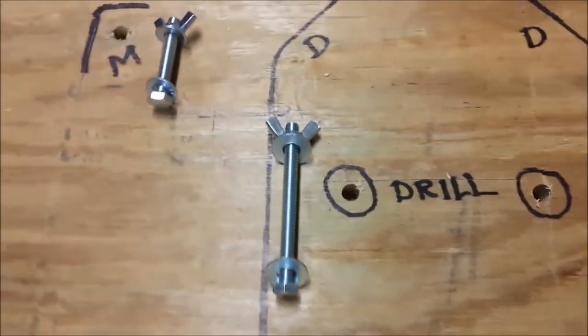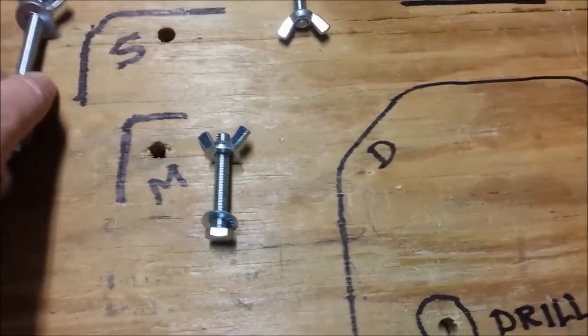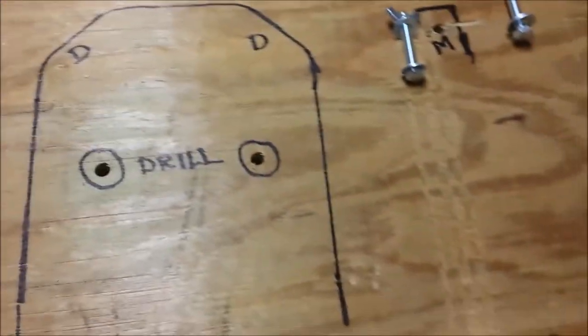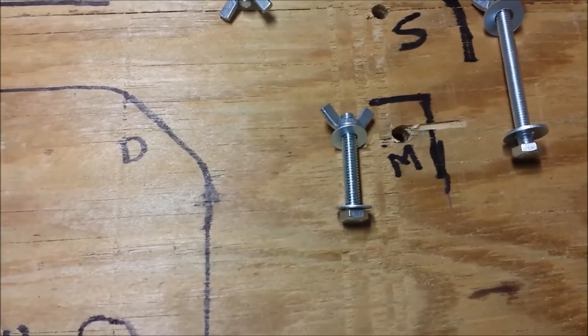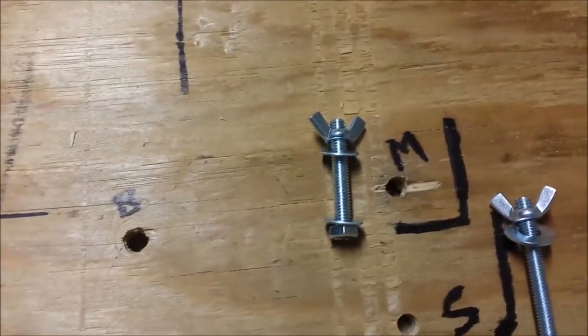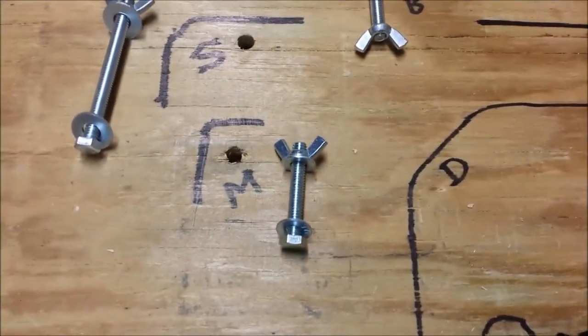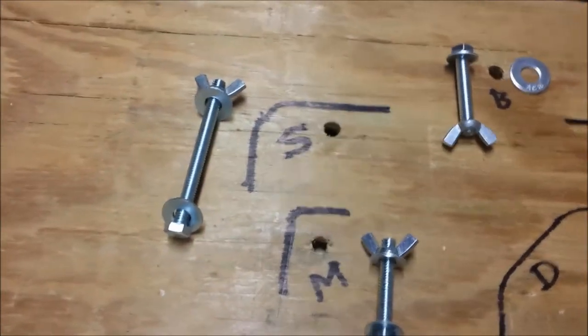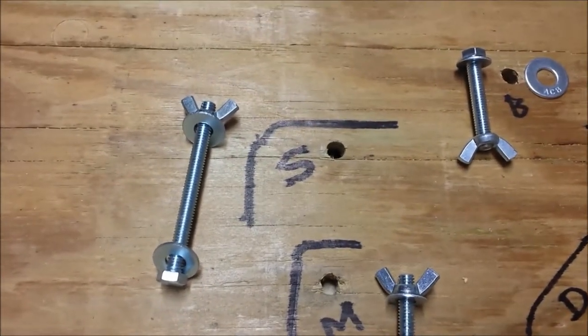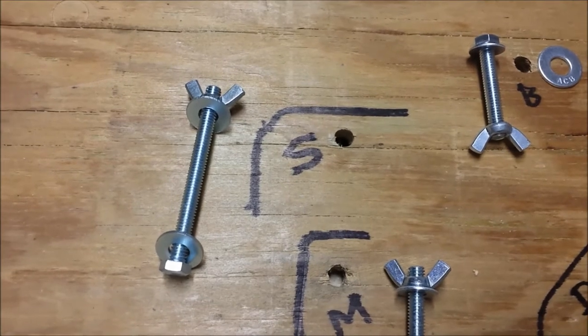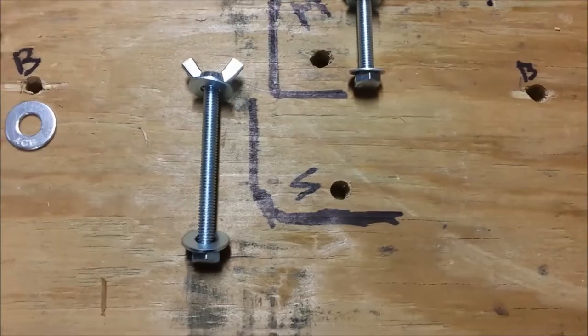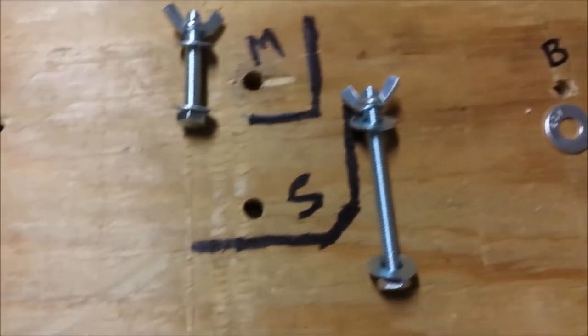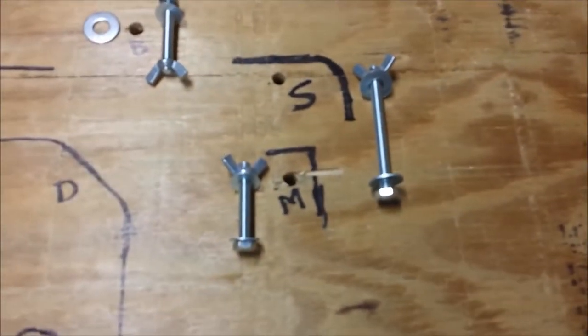The same bolt that you see here I'm also going to use on the table saw and we'll talk about that in a minute. Then you see right here the bolts and the wing nuts and washers that I've used for the miter saw. I have four of those right there and then you can see I've taken the outline of the table saw and marked that as S and I have much longer bolts there and I share those bolts with the drill press. So you can see I've got all four right there.